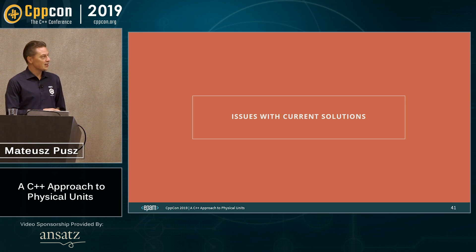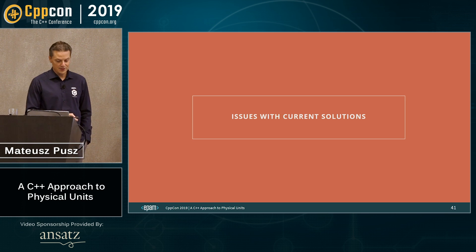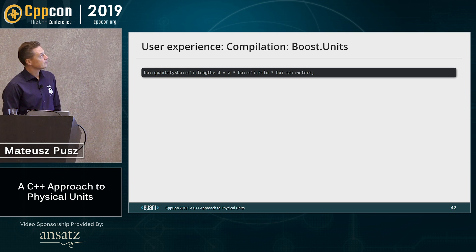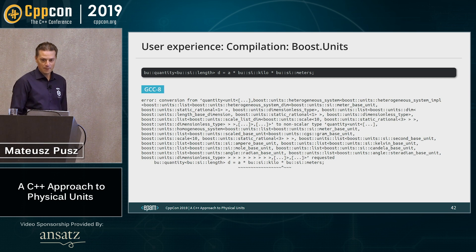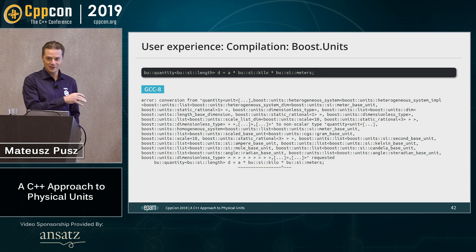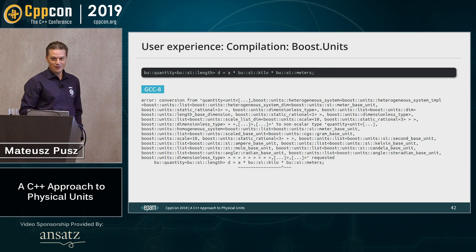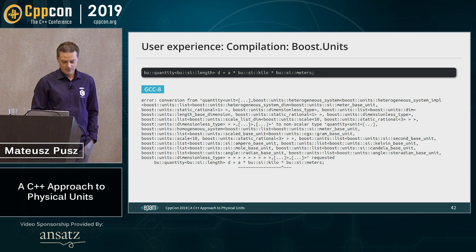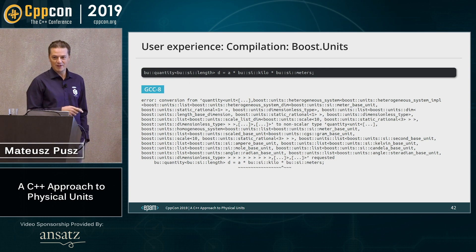Let's look at user experience issues from the current designs. With boost units, if you have a quantity of length and try to assign kilometers to it with copy-initialization, you get a compiler error. This is the first line of the error — there is more. The most important line is really hard to understand. With GCC it's a long error; Clang produces shorter messages. What happened is that copy-initialization doesn't allow implicit conversions, and boost units has an explicit constructor, so you have to use direct initialization.